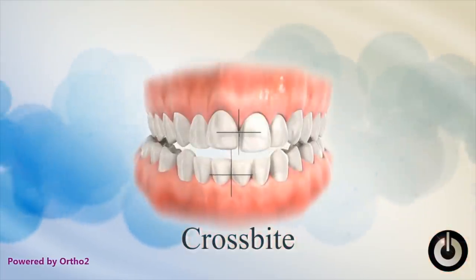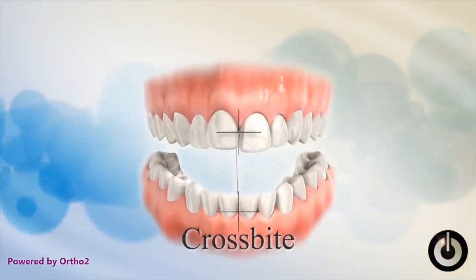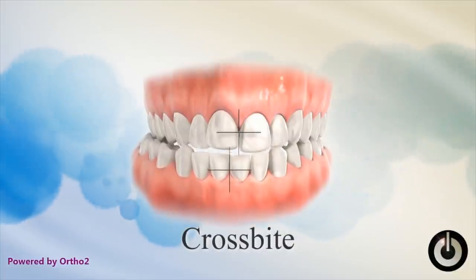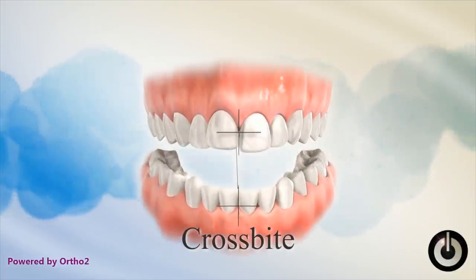Sometimes there's only a crossbite on one side, which is called a unilateral crossbite. This is often caused by a patient who bites down and has a narrow jaw, shifting to one side because the teeth hit in an uncomfortable way. Over time this can lead to asymmetric growth or an asymmetric bite — so early intervention for these crossbites is really, really important.